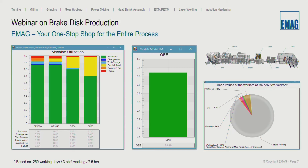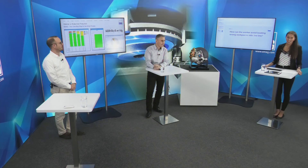We often get the question: how many workers will we need for this line? This slide shows it very clearly — one person will be more than enough. We have a setup time of five percent and a repair time of 2.4 percent, meaning approximately 91 percent of the time the operator is free and can take care of other tasks, such as another line.